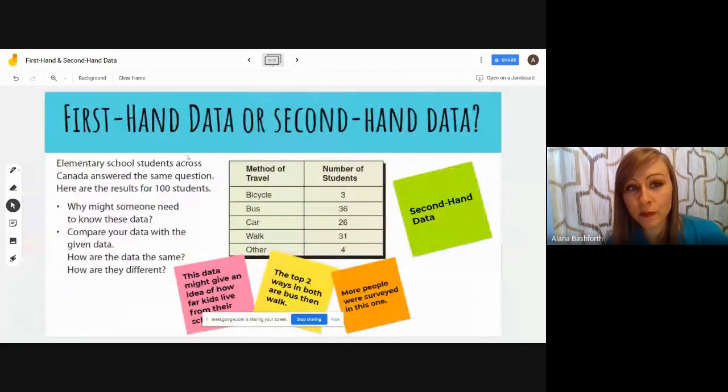But for this survey what's different is there were more people surveyed in this one, there was 100 in this one and there's twenty in the other one. Other differences is there's way more people that take each thing. Then I thought it was funny for similarities that bicycle both has three on it. That is the basics of the lesson, you're just figuring out first-hand data and second-hand data.